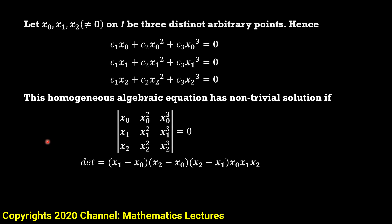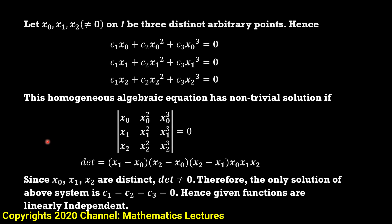From this we conclude that the system of three equations has no non-trivial solution. Therefore, the only solution is c1 = c2 = c3 = 0. Based on this, we can say that the functions f1(x) = x, f2(x) = x², and f3(x) = x³ are linearly independent functions.